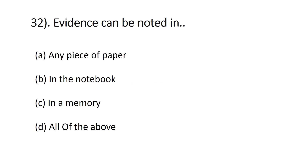Question thirty-two: evidence can be noted — A) in any piece of paper, B) in the notebook, C) in memory, D) all of the above. You can record evidence in a piece of paper, in a notebook, or in memory — for example, in your phone. The correct answer is D, all of the above.